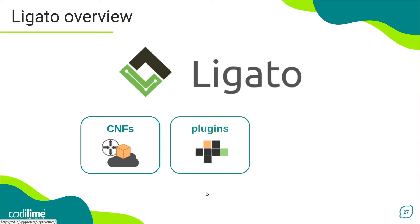In a nutshell, the Legato framework is a set of plugins. In general, plugins can be understood as modules that provide specific functions or perform specific tasks. Legato offers a whole range of different plugins that can be assembled in various combinations to create CNFs of different flavors.